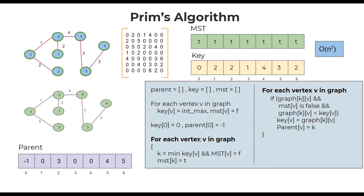Coming to the time complexity, we have two loops iterating through all the vertices, so the time complexity is O(N²), where N is proportional to the number of vertices in the graph. To improve the efficiency of Prim's algorithm, we can use a priority queue to select the minimum key value, or a binary heap.